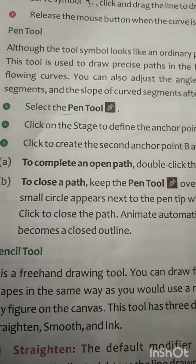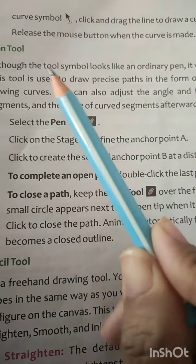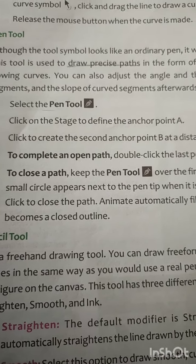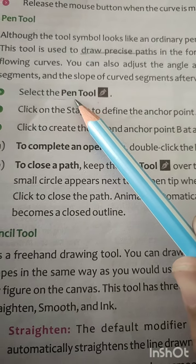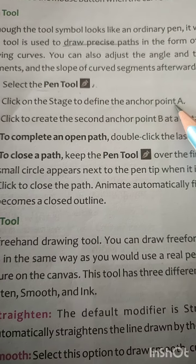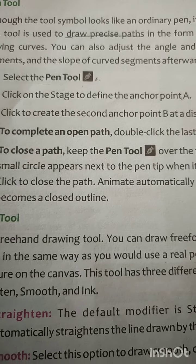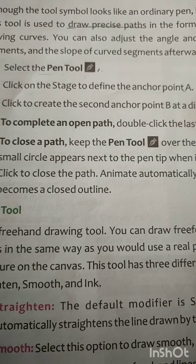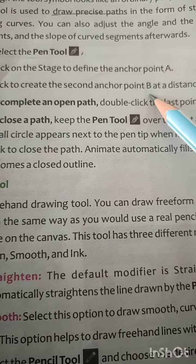The pen tool is basically used to draw a precise path. You can draw precise paths and you can draw straight lines or curve lines. To use the pen tool, first select it from the tools panel. After that, you make an anchor point by clicking where you want to start the line — that will be your anchor point A. Wherever you want the line to go next, you click there for anchor point B.